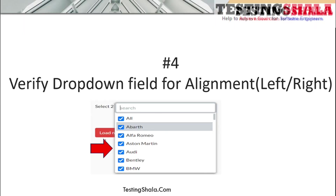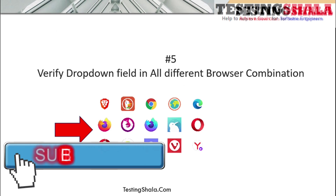You should also validate the dropdown field content alignment — whether it is left-aligned or right-aligned. Additionally, for all dropdown fields implemented in your application, you should test that they can be accessed across different combinations of browsers and operating systems to ensure the dropdown behaves as expected everywhere.